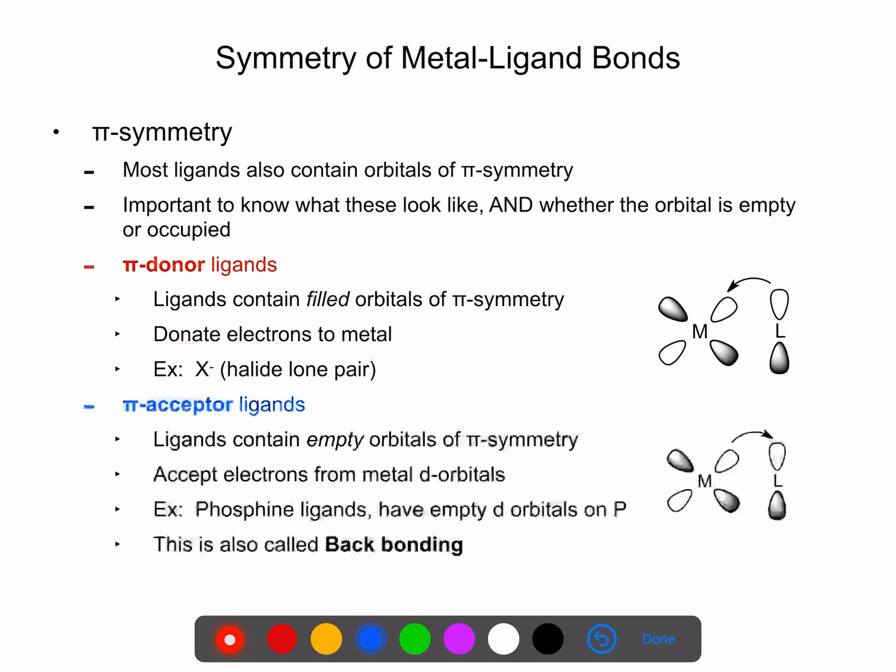And then we can also have a pi-acceptor ligand. In this case, it's the same type of bond symmetry, but it's the metal that's donating into the ligand. This is also what's known as backbonding, because typically in this situation, the ligand is still donating through a sigma bond. And then what we have is this backdonation from a metal d-orbital into an empty pi-symmetry orbital of the ligand.